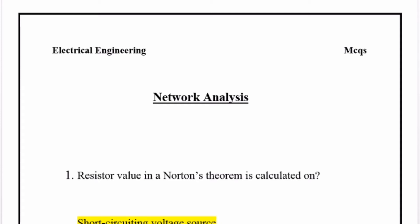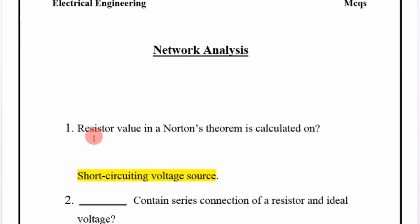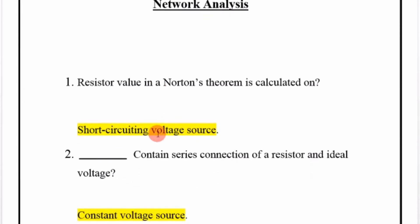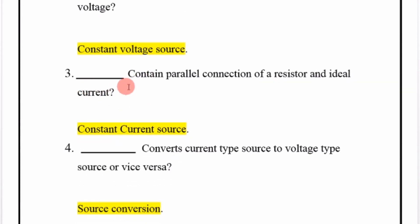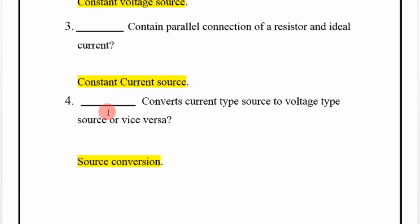Welcome to the next lecture of network analysis. In Norton's theorem, the resistor value is calculated by short-circuiting the voltage source. A dash contains a series connection of a resistor and an ideal voltage source. A dash contains a parallel connection of a resistor and an ideal current source. A dash converts a current-type source to a voltage-type source, or vice versa — source conversion.